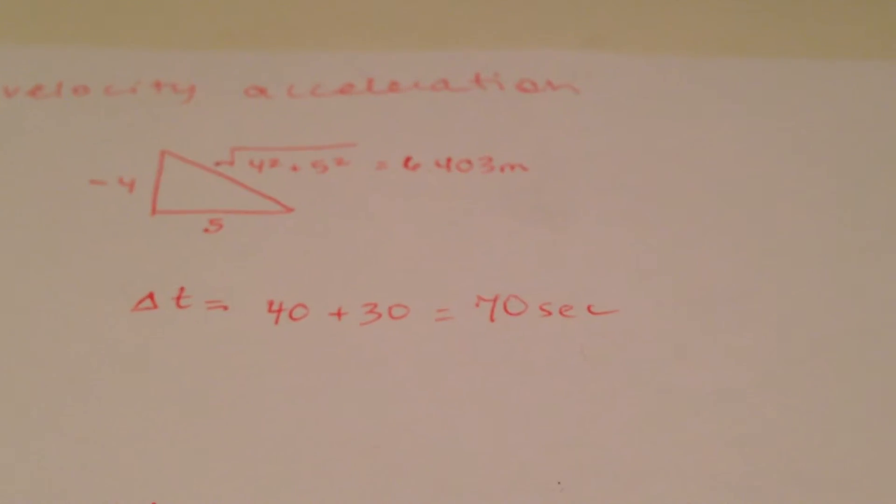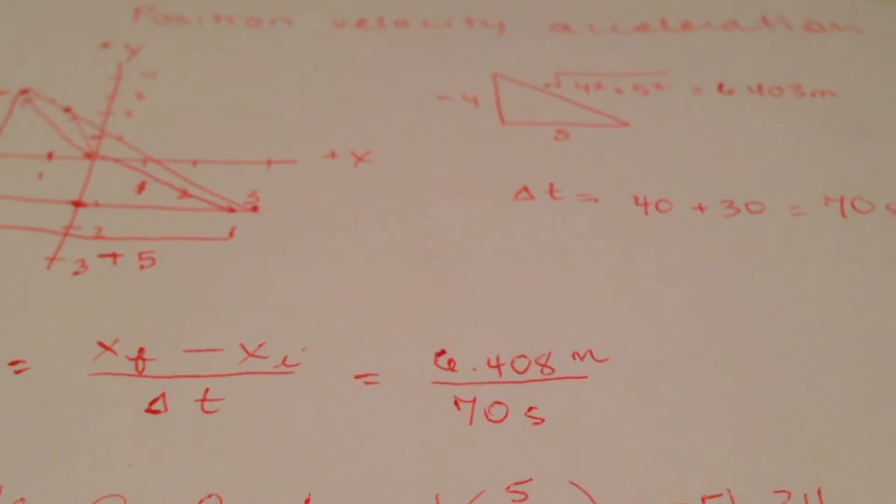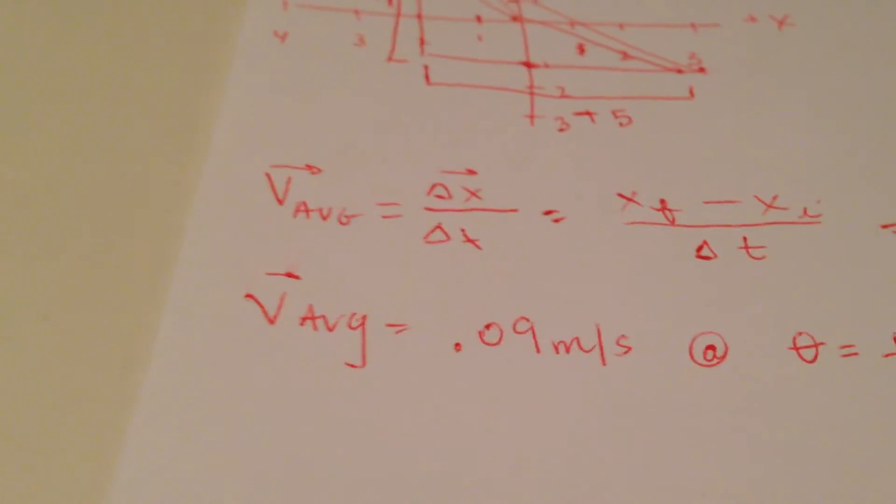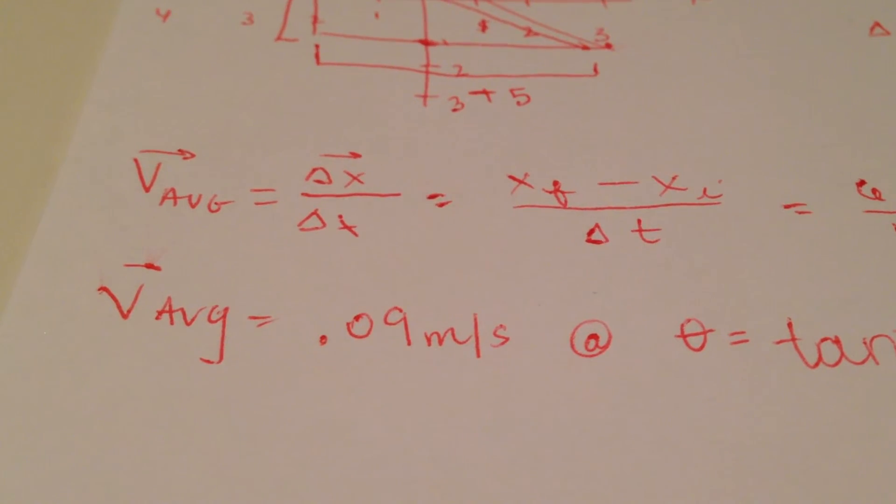So 6.408 meters divided by 70 seconds, and that gives us 0.09 meters per second.